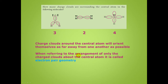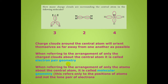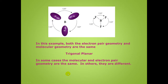When we refer to the arrangement of only the charge clouds about the central atom, we call that the electron pair geometry. When we refer to the arrangement of only the atoms about the central atom, we call that the molecular geometry. This refers only to the positions of the atoms and not the lone pairs of electrons.